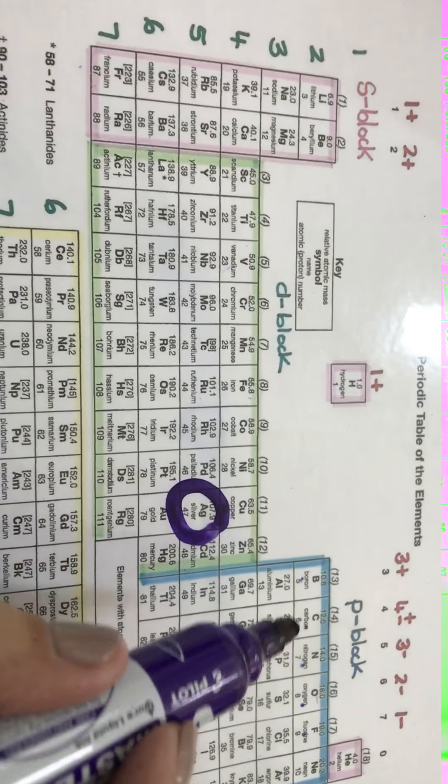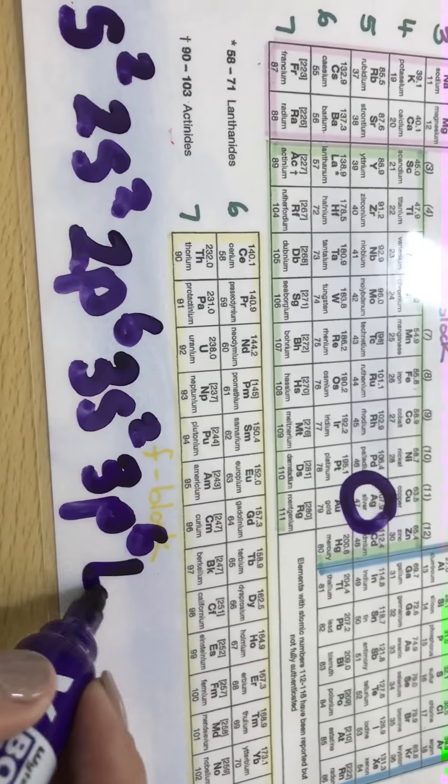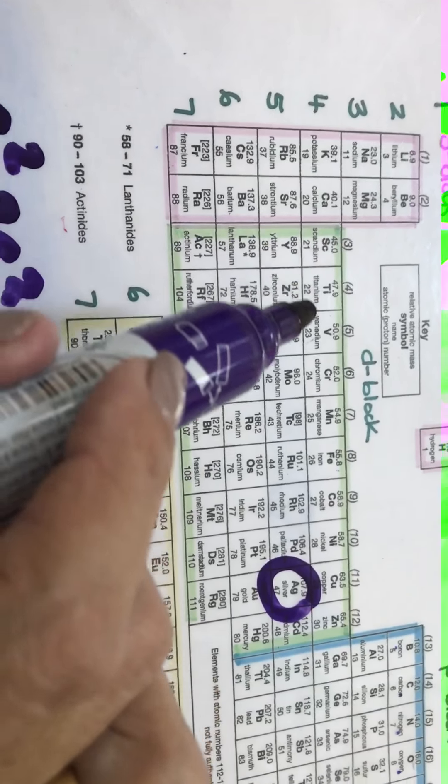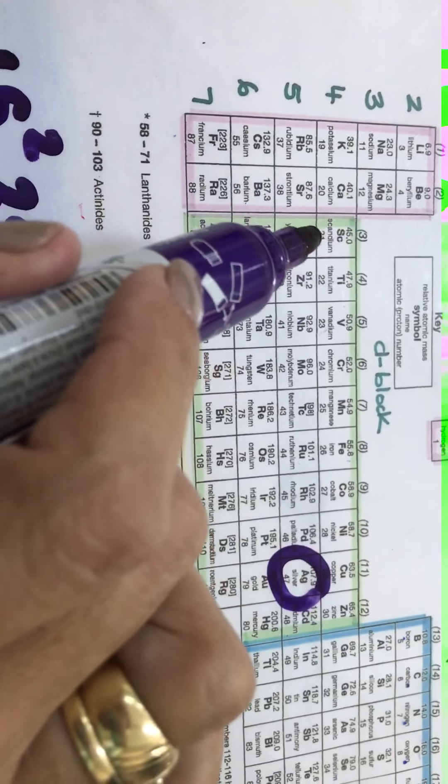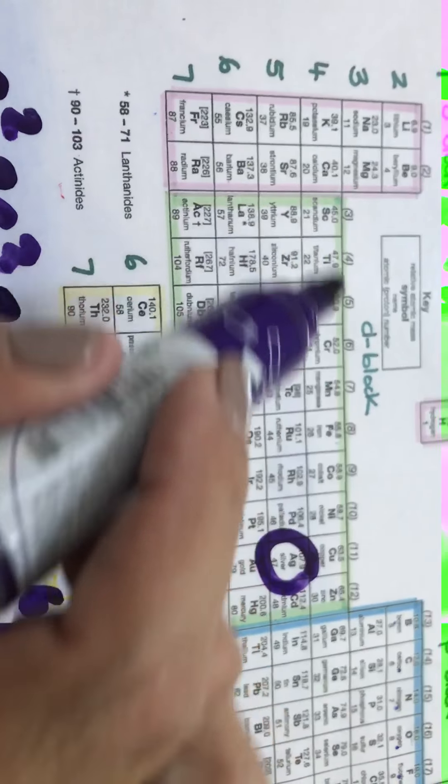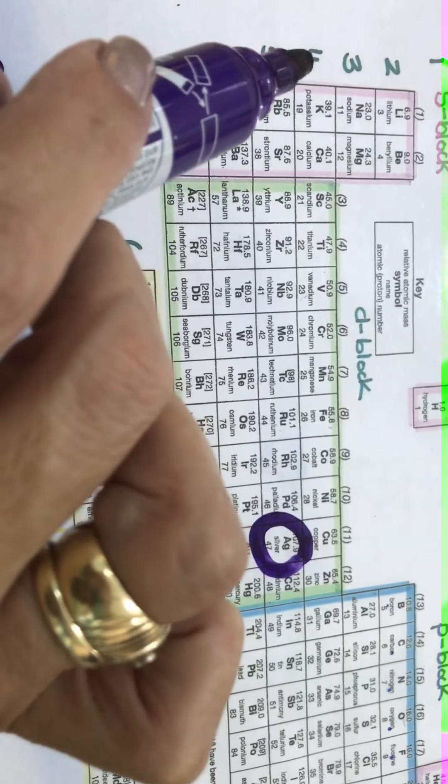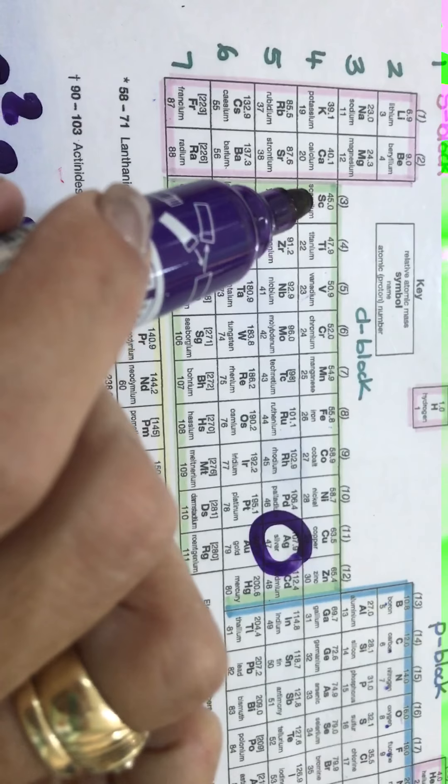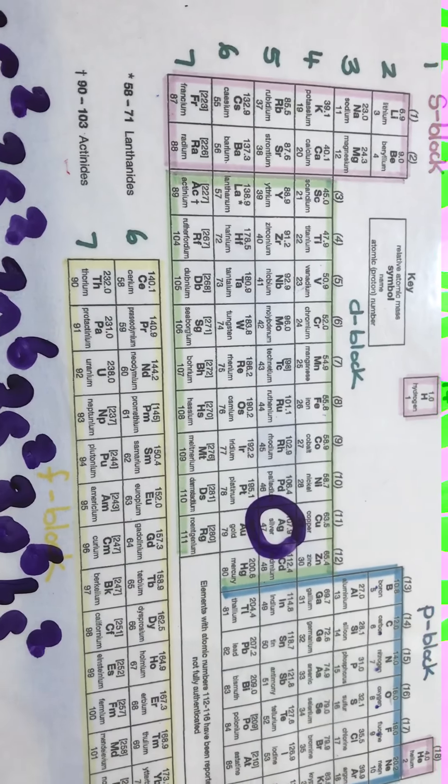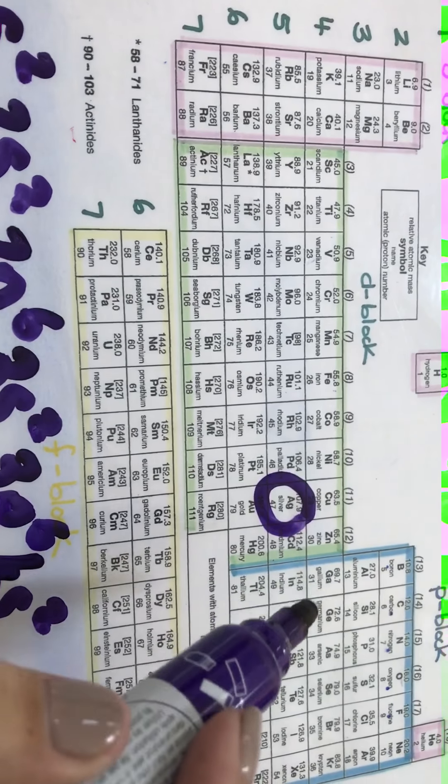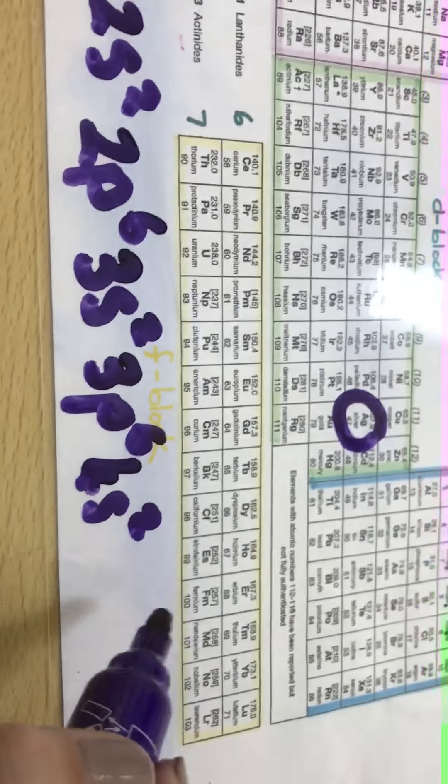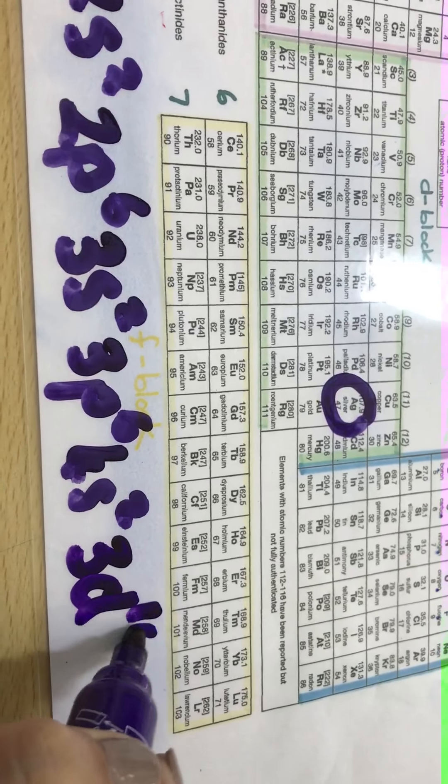Then from 3p I come to 4s which has two electrons. But the interesting thing is when we go—we need to go to this block. This is my d block but this is not 4d. For the d block, if this is the fourth period, this is 3d. Now the electrons will go to 3d before they will go to the 4p. This is 4p over here. So it will be 3d which can take 10 electrons.